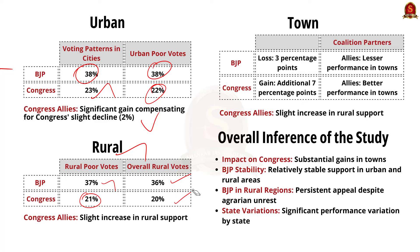Congress allies also saw a slight increase in rural support. Regarding towns: town voters contributed the most to Congress's improved performance. Congress secured an additional 7% in towns, whereas the BJP lost 3%. Coalition partners of Congress also fared better in towns compared to the BJP. Overall, the impact of spatial distribution was more pronounced for Congress than for BJP. Congress saw substantial gains in towns while BJP's support remained relatively stable across urban and rural areas. The BJP's appeal in rural regions persisted despite agrarian issues, though performance varied significantly by state.